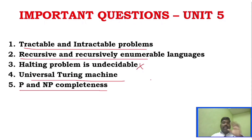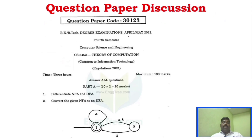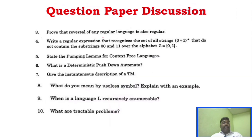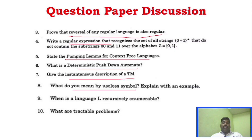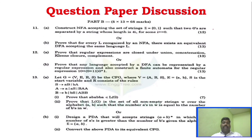Now we will see question paper discussion. We will look at the April/May 2023 question paper. The 2-mark questions are predefined and more than enough. Two-mark topics include: differentiate NFA, regular expression, state the pumping lemma for context-free languages, deterministic pushdown automata, instantaneous description of TM, useless symbol, language L recursively enumerable, and tractable problems.